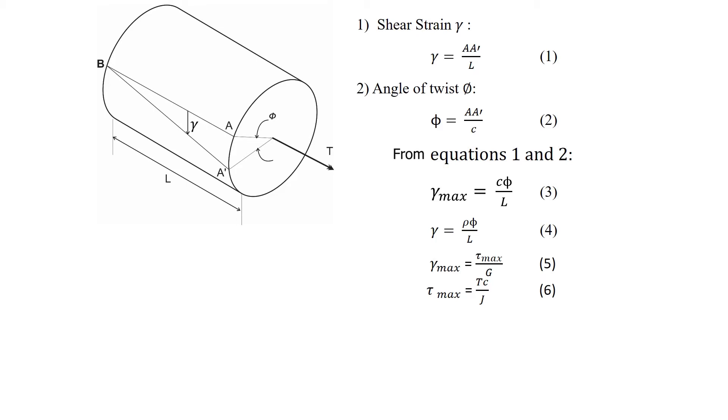Combining equations three, five, and six, the angle of twist for the entire shaft is given by this equation. When a shaft is subjected to several different torques, or the cross-sectional area, or shear modulus changes from one region of the shaft to the next, we can use the following equations.